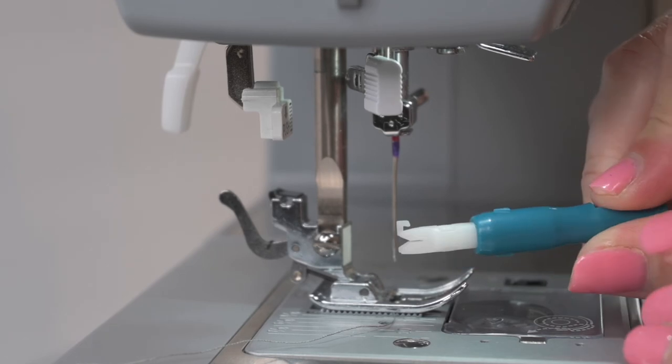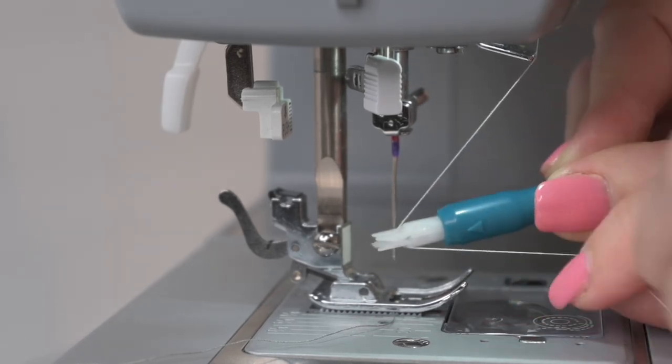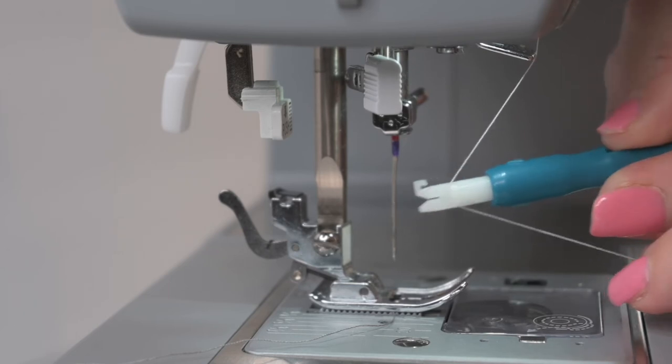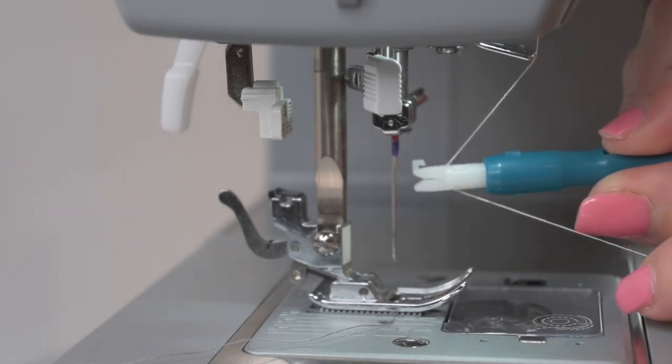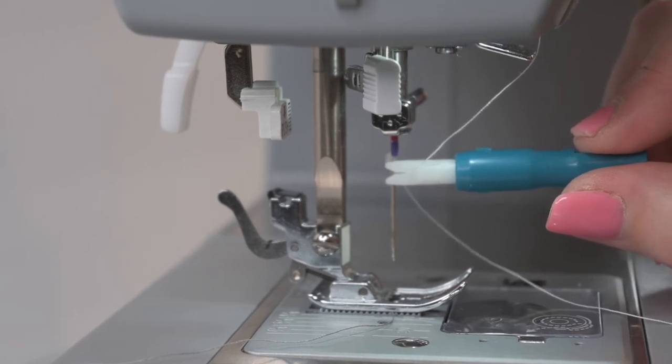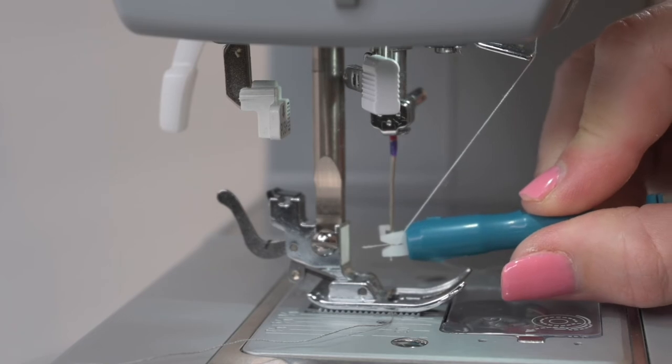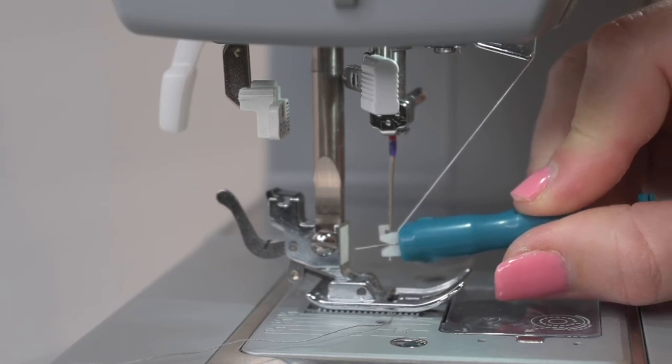So I'm going to take that hook, turn it to its side, and grab my thread this way. Then I turn my tool the other way so that that hook is on top, bring it to the needle itself that's on the machine, slide it down until I get to the approximate area where the needle will go through the machine, and I push this in.